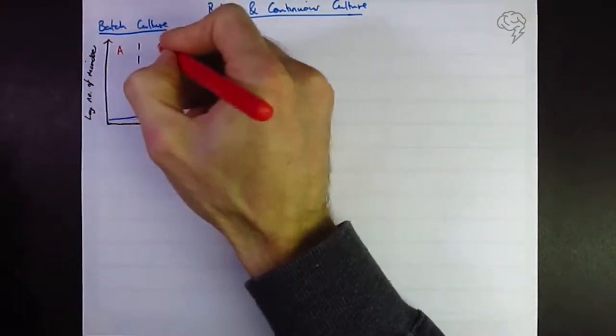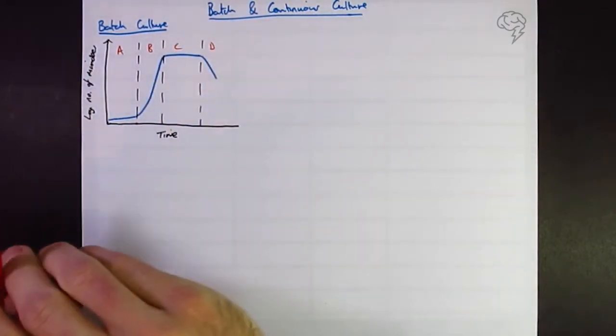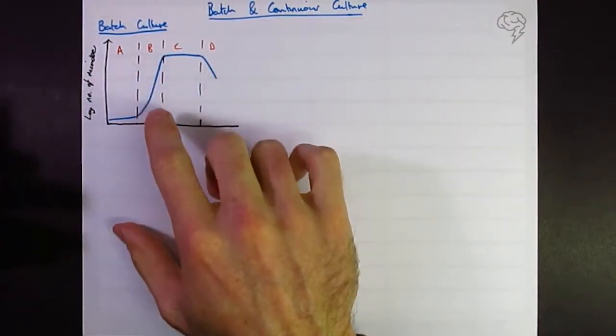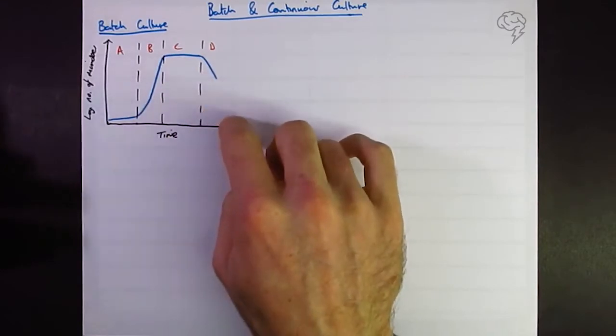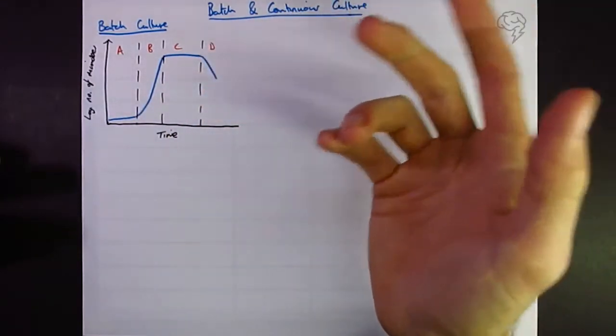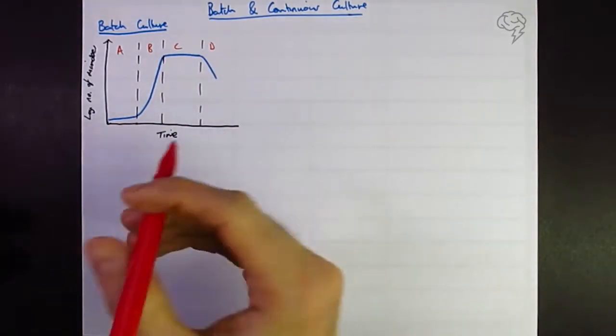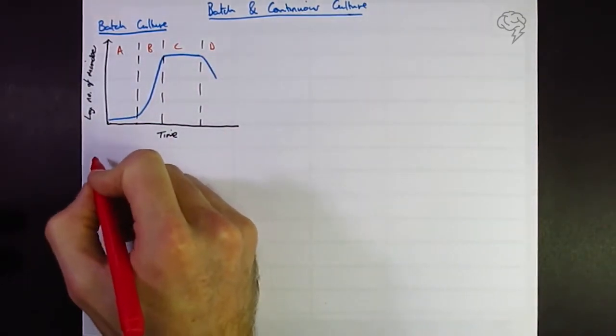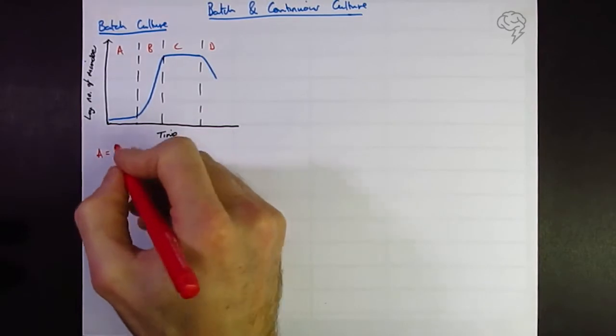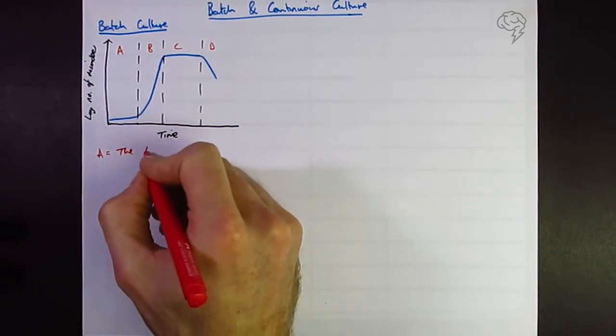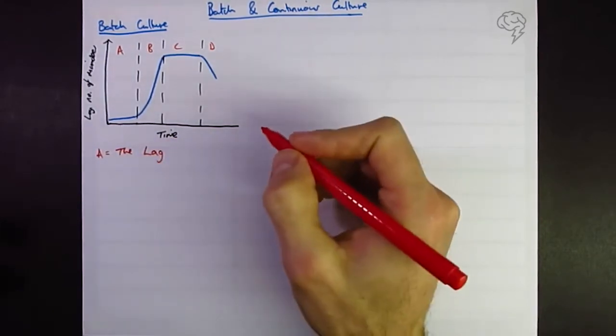I'm just going to call them A, B, C, and D. I'm going to add a few more bits and pieces to this graph, but at the end this is the main part. We're going to look at what happens to the biomass of the microorganisms in there and the nutrients and stuff like that as well. But let's start off with A. This is called the lag phase.